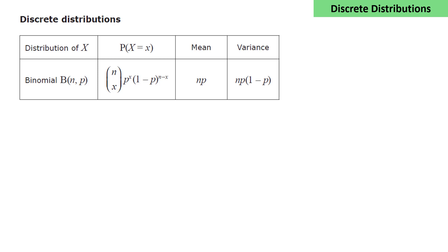If a random variable x follows a binomial distribution with n trials and probability of success p, we have the probability that x takes a particular value: nCx times p to the x times 1 minus p to the n minus x. The mean of the distribution is n times p and the variance is np times 1 minus p.